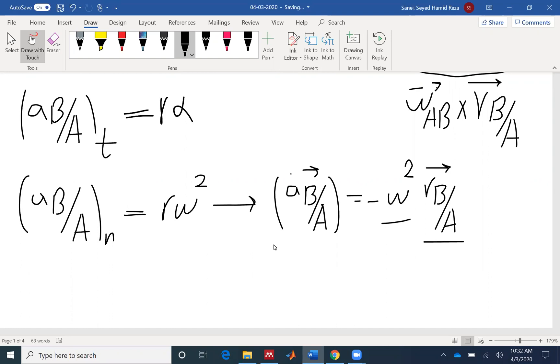So this equation shows us that the direction of omega does not matter because it's squared. So regardless whether the direction is clockwise or counterclockwise, the acceleration would be the opposite direction of RBA because of this negative sign.